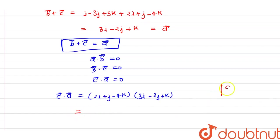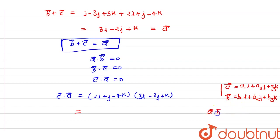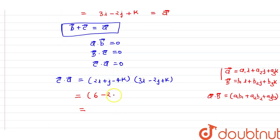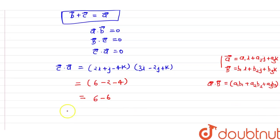Using the dot product formula: if vector a = a1·i + a2·j + a3·k and vector b = b1·i + b2·j + b3·k, then a · b = a1·b1 + a2·b2 + a3·b3. Applying this, we get (2)(3) + (1)(−2) + (−4)(1) = 6 minus 2 minus 4 = 6 minus 6 = 0. So vector c · vector a equals zero.